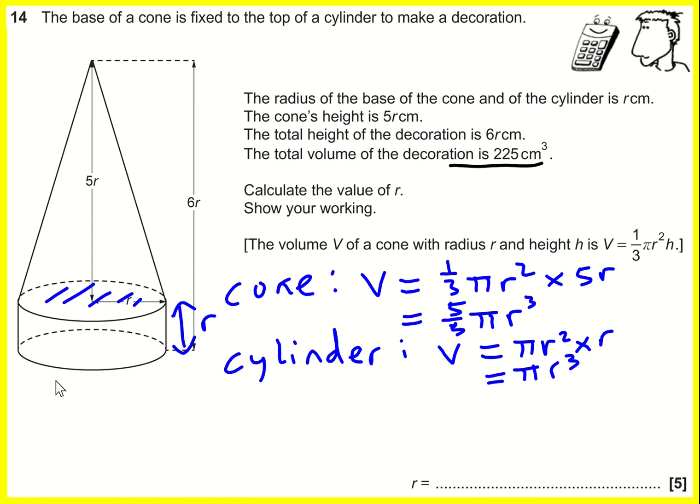Therefore, it's going to be, I could write that as three over three π r³, so overall it's going to be eight over three π r³. I've just added them together, this and this, I can set that equal to 225.